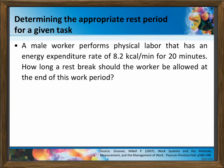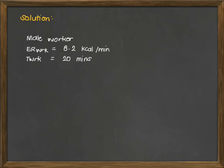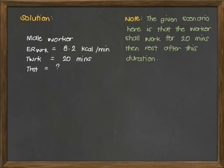The second formula applies within the work time where resting is embedded - that is the second rest formula. In our solution: male worker, ER work is 8.2 kcal per minute, and T work is 20 minutes. We are to compute T rest. The given scenario is that the worker shall work for 20 minutes then rest after this duration, so clearly this is the first rest formula.